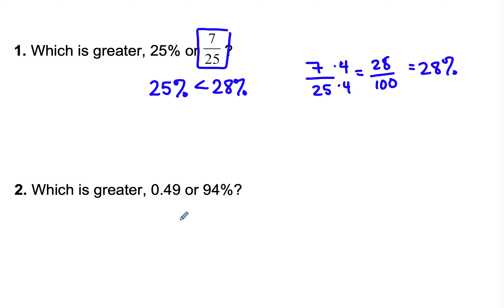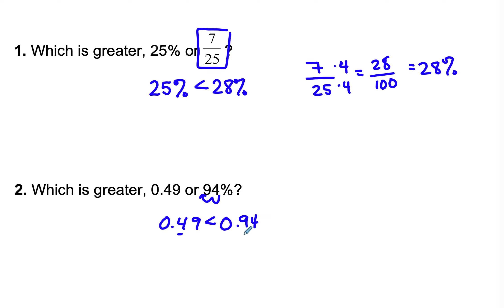Which is greater: 49 hundredths or 94 percent? I made the last one a percent, so we'll make these decimals. 94 percent, moving the decimal two places over, becomes 0.94. So 0.49 is less than 0.94. The ones place value is the same, but when we compare the tenths, nine tenths is greater than four tenths. So 94 percent is the greater one.